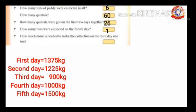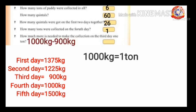Last question: how much more is needed to make the collection on the third day one ton? Paddy collection on the third day equals 900 kilograms. We know 1000 kilograms make one ton. To find how much more is needed: subtract 900 kilograms from 1000 kilograms. 1000 minus 900 equals 100. So 100 kilograms more is needed.